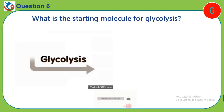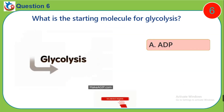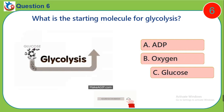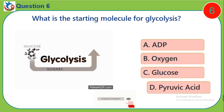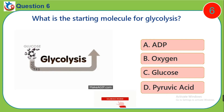Question 6. What is the starting molecule for glycolysis? A. ADP. B. Oxygen. C. Glucose. D. Pyruvic acid.